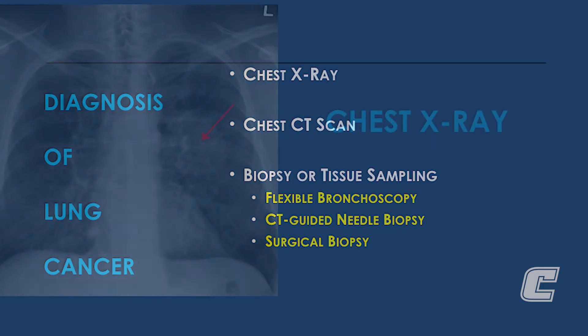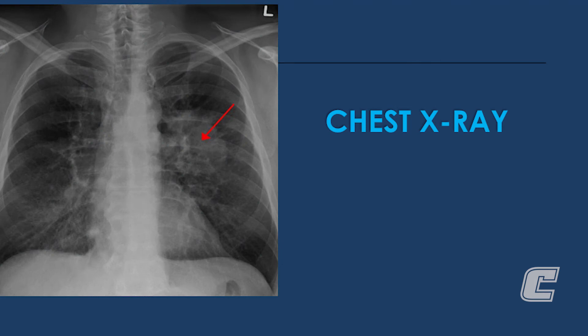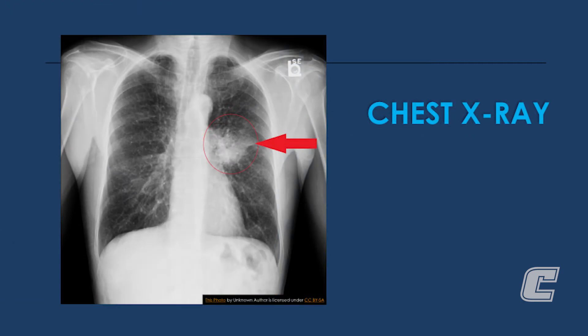This is an example of a chest x-ray. The hazy area that the red arrow overlies is a tumor in the left lung that was later found to be lung cancer. This is another chest x-ray that shows an abnormal density in the left lung — a biopsy of this density was also later found to be lung cancer.